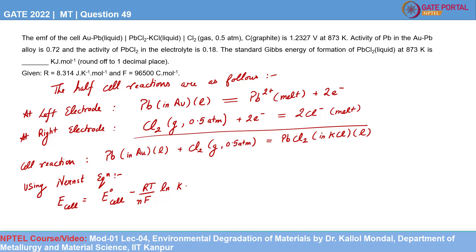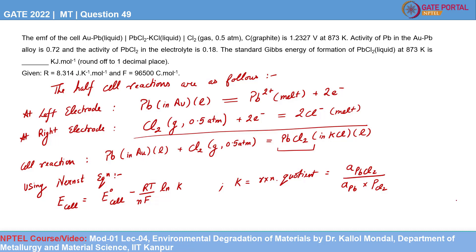R is the universal gas constant, T is the temperature, N represents the number of electrons taking part in the reaction, and F represents Faraday's constant. The reaction quotient K equals the activity of lead chloride on the right-hand side divided by the activities of the reactants — lead and chlorine gas.